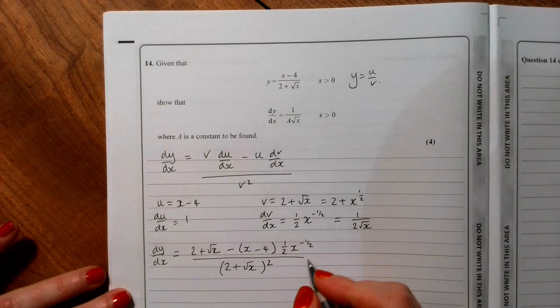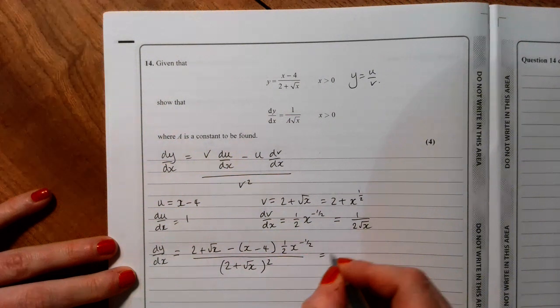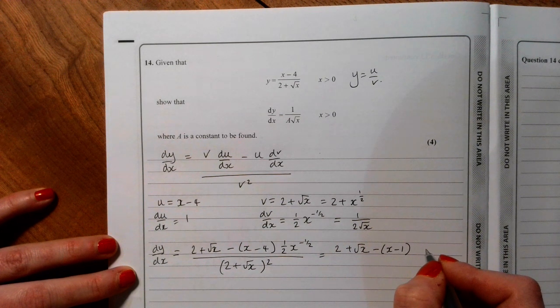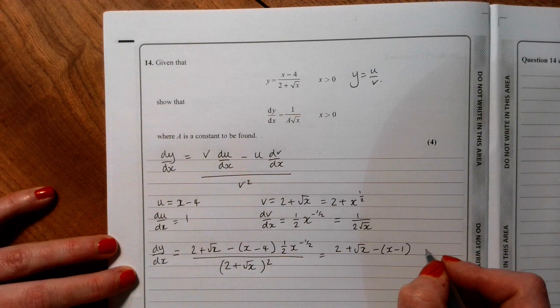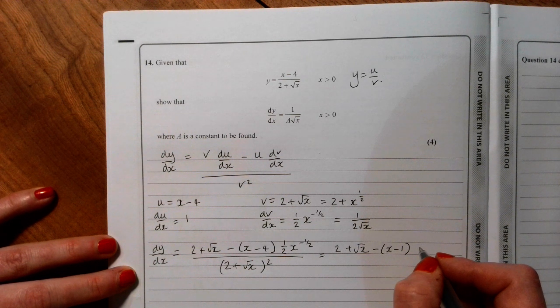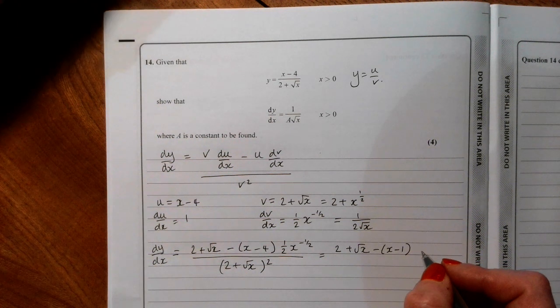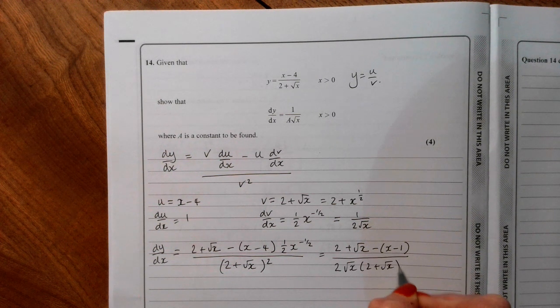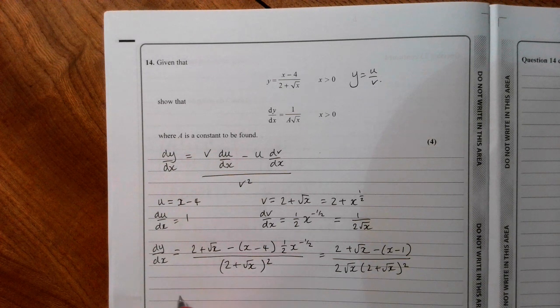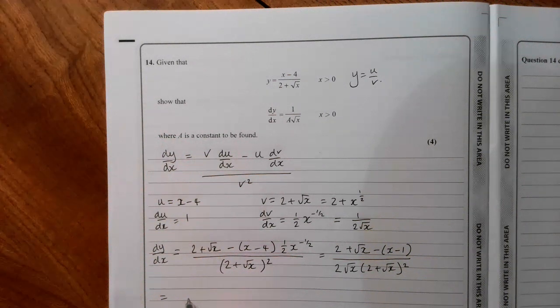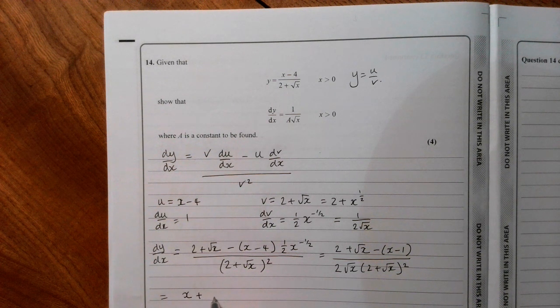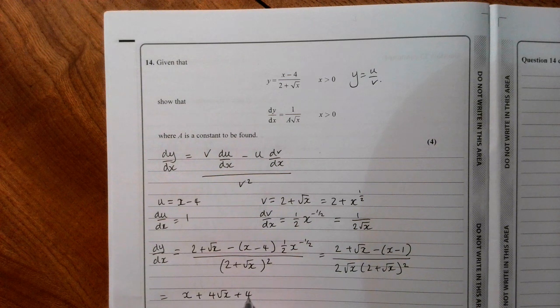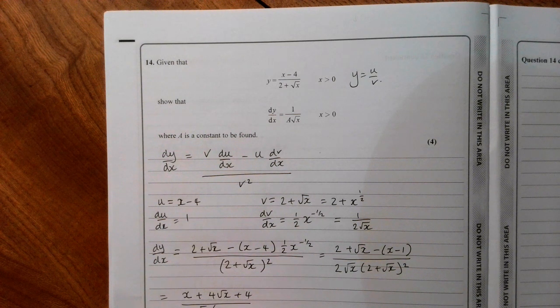We're ready to expand and simplify. So the numerator, I've got 2 plus root x times x minus minus 4. Let's write that as 1 half, actually I'll take the half x to the minus 1 half down as a 2 root x, and then that numerator I've got x plus 4 root x plus 4, all squared.